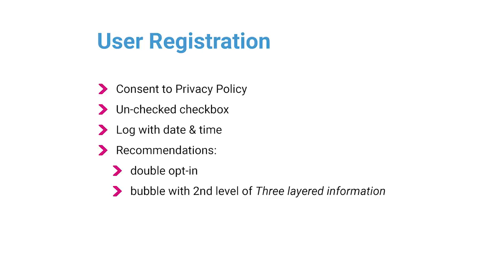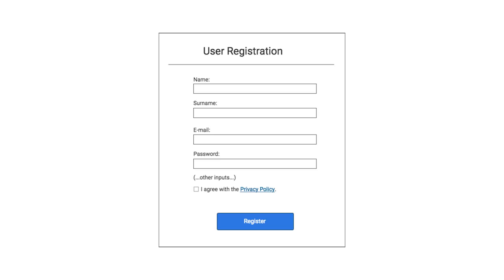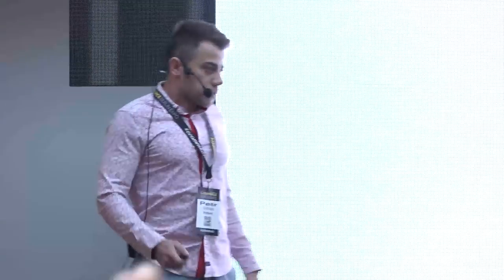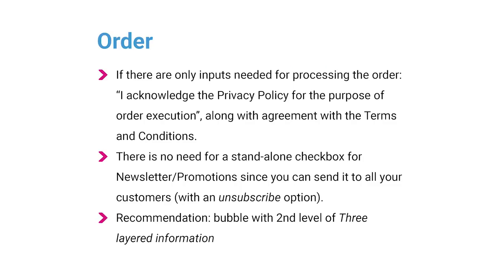The wireframe shows typical inputs with a checkbox for the first layer, optionally with the second-layer hovering bubble and a link to the privacy policy. The same applies for user registration — you use a typical registration form and add a checkbox for agreeing with the privacy policy.